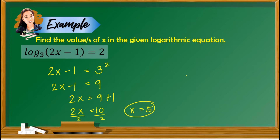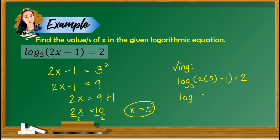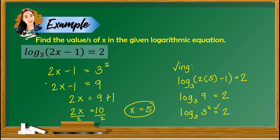To check if this is a real solution, we plug in 5: logarithm of 2 times 5 minus 1 with base 3 is equal to 2. This gives logarithm of 9 with base 3 equals 2. Rewriting 9 as 3 squared: logarithm of 3 squared with base 3 is equal to 2. Using the basic property of logarithm, the answer is the exponent itself, giving us a true statement. So x equals 5 is a real solution.